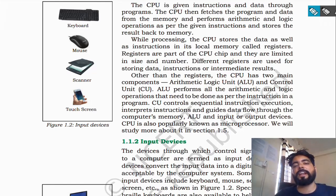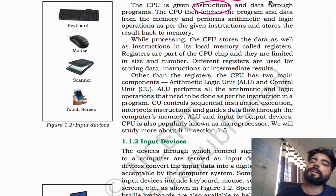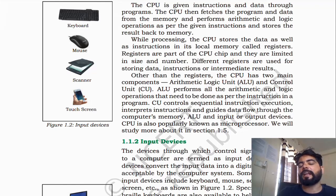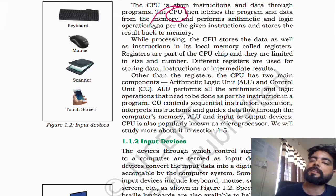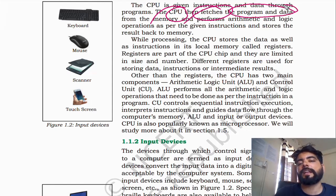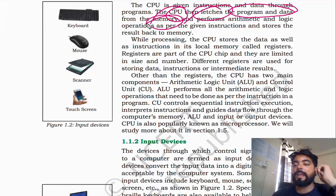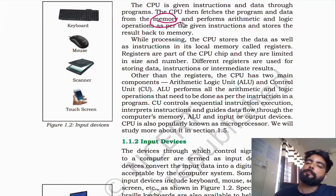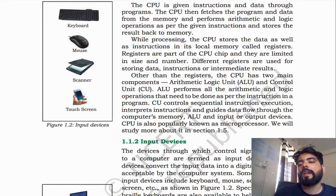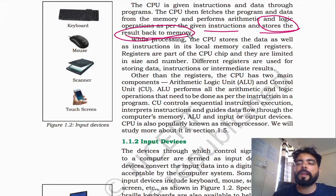CPU is given instructions and data through a program. The CPU then fetches the program and data from the memory and performs arithmetic and logic operations as per the instructions given by the user. It then stores the result back to the memory. So what happens is: input goes to memory, ALU takes it from memory, processes it, and puts the output back in memory. The output device then reads it from primary memory.